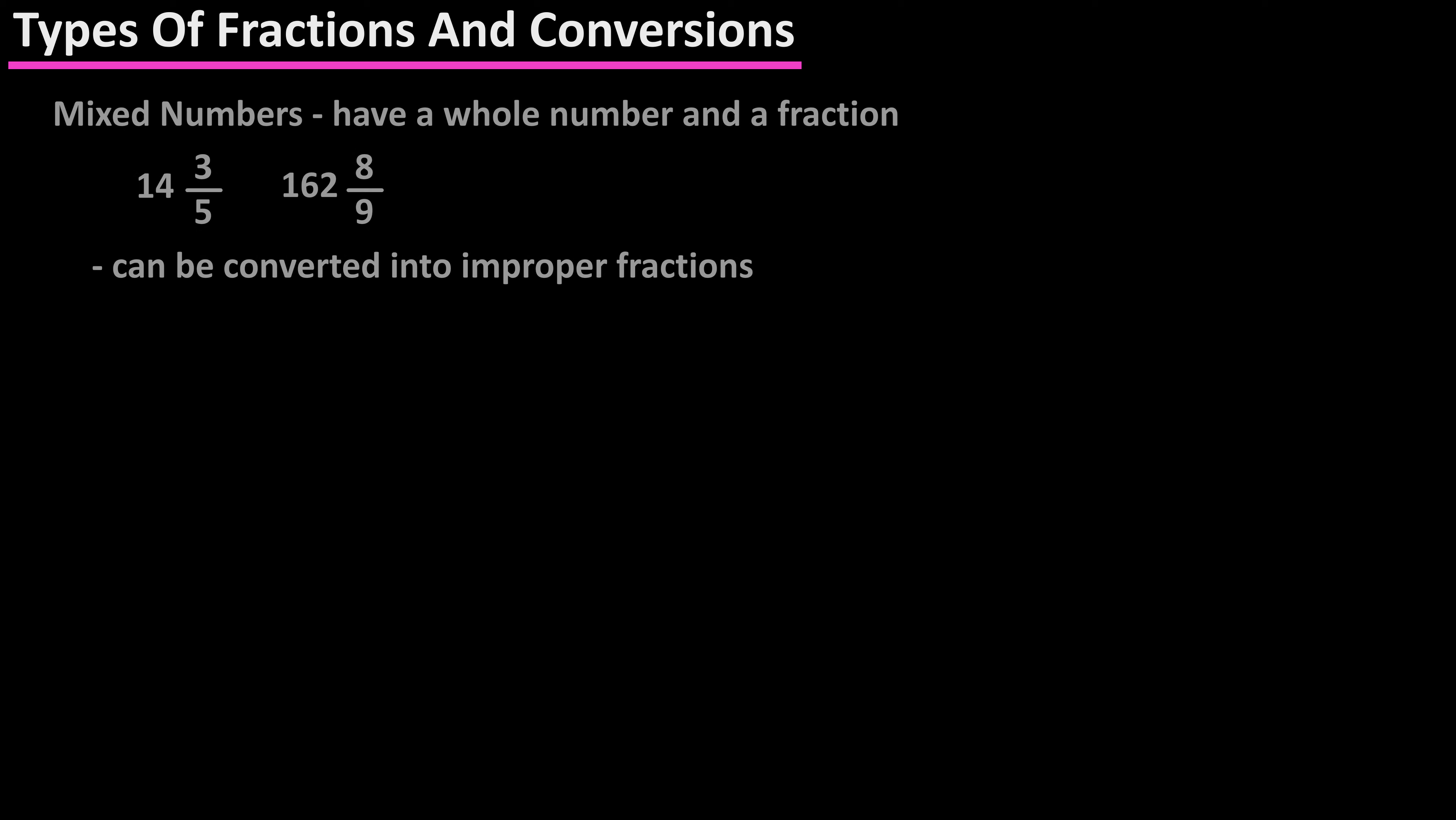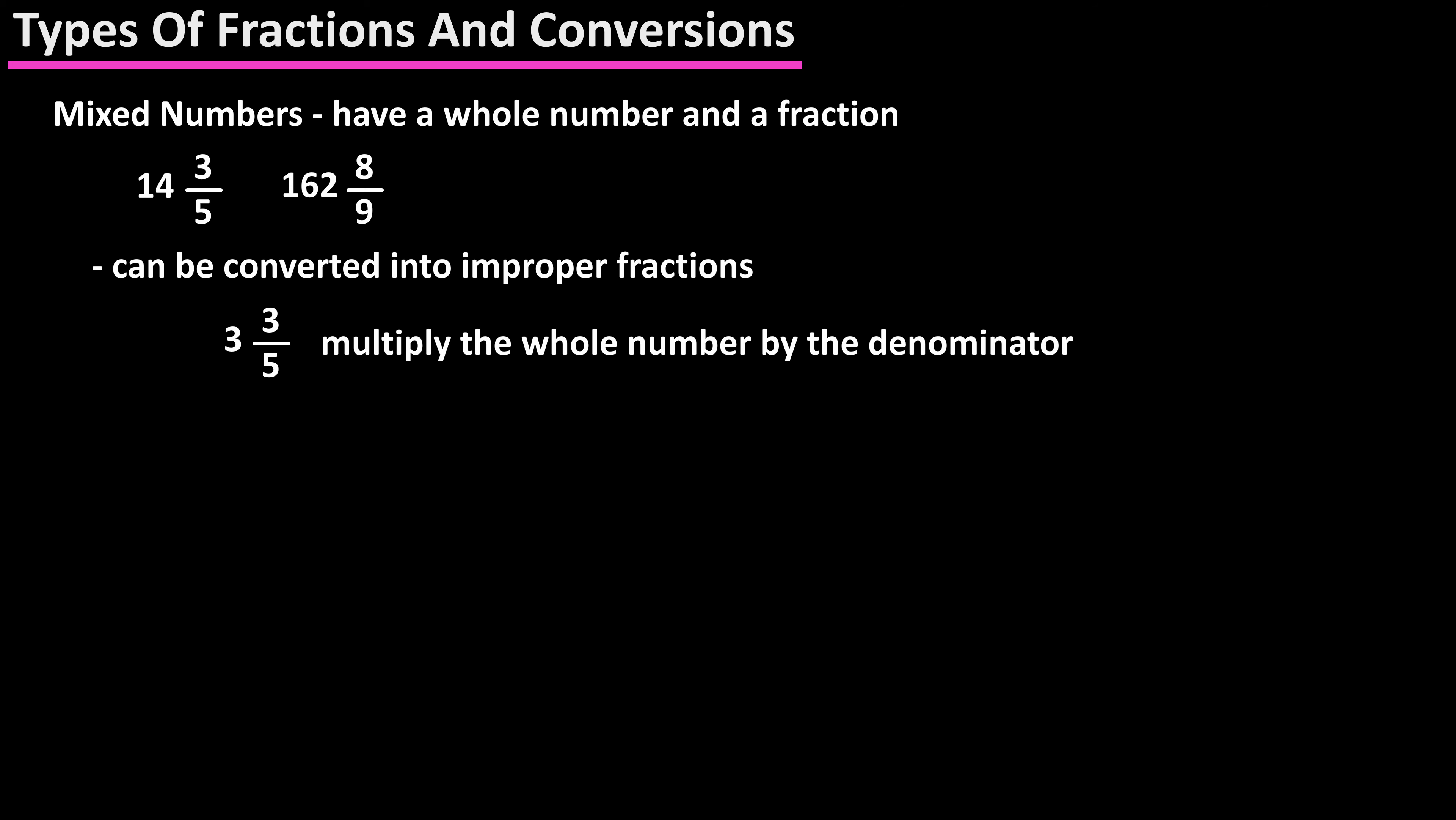Mixed numbers can also be converted to improper fractions. For instance, 3 and 3 fifths. To do this, we multiply the whole number by the denominator, so 3 times 5, which is 15.